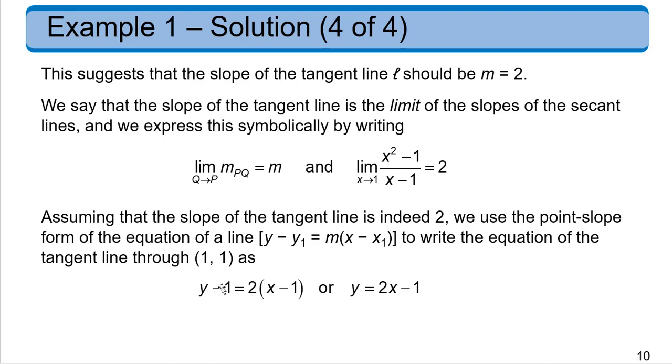So we can plug that into our point slope form formula. Put 2 in for m, put in our point of 1, 1, for the y and the x. Do a little simple math. And we get this is the equation of the tangent line at that point, 1, 1.